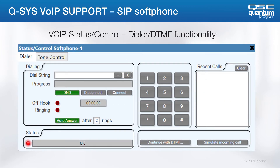This is the status and control block where you push all the DTMF buttons while in the call. Beyond the basics, there's do not disturb, connect, disconnect, off hook, ringing, and auto answer. You'll also see the status of the softphone communicated by SIP, as well as options for continual DTMF and simulating incoming calls for troubleshooting.